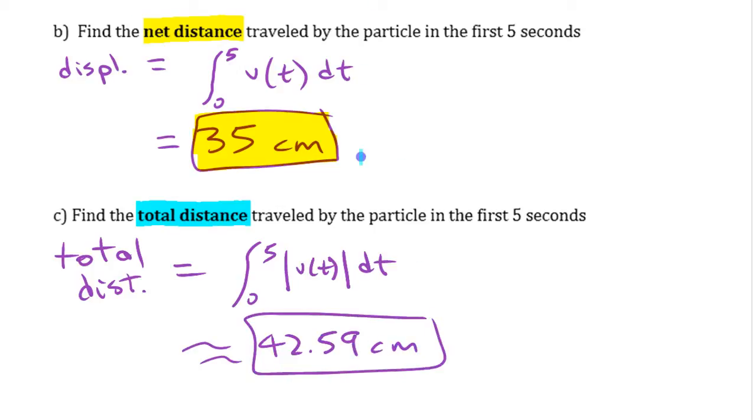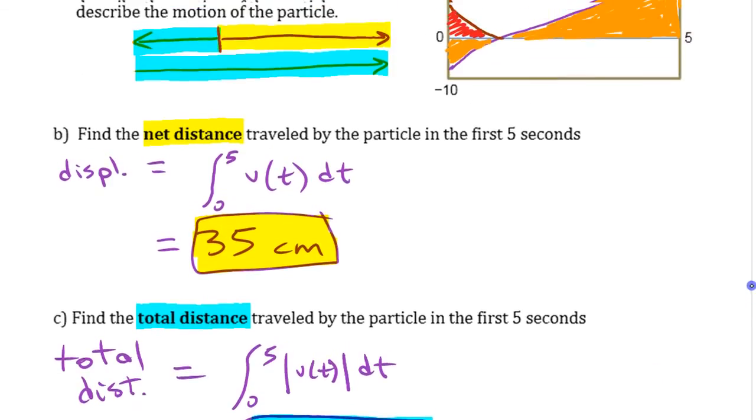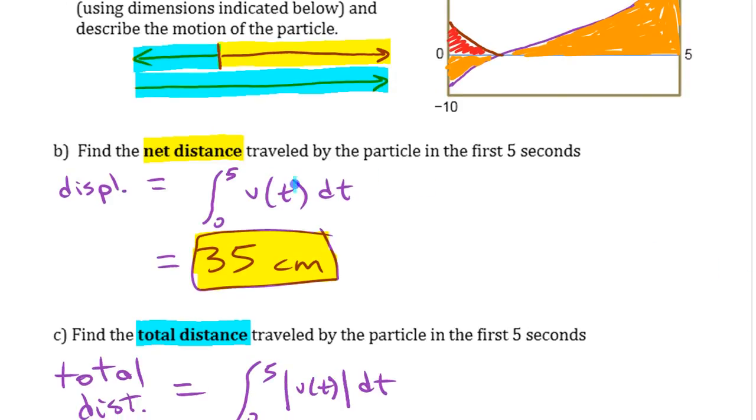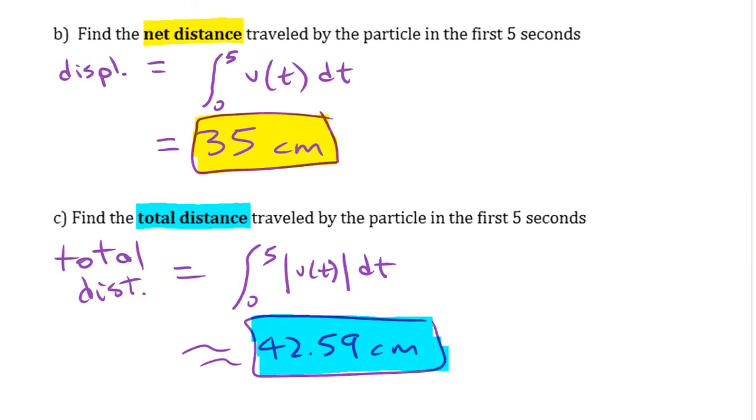That was that total distance traveled, the backwards and the forwards. If you go back to our little diagram there of the motion, that's all of that blue, treating it all as positive. Basically taking this and putting it right here and then looking at what is that total distance there. So that's the difference in how you can use integrals, net distance and total distance with velocity functions.